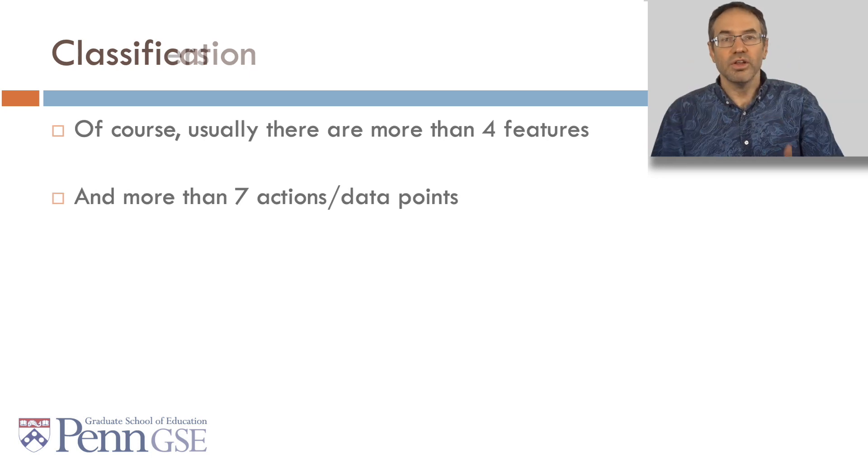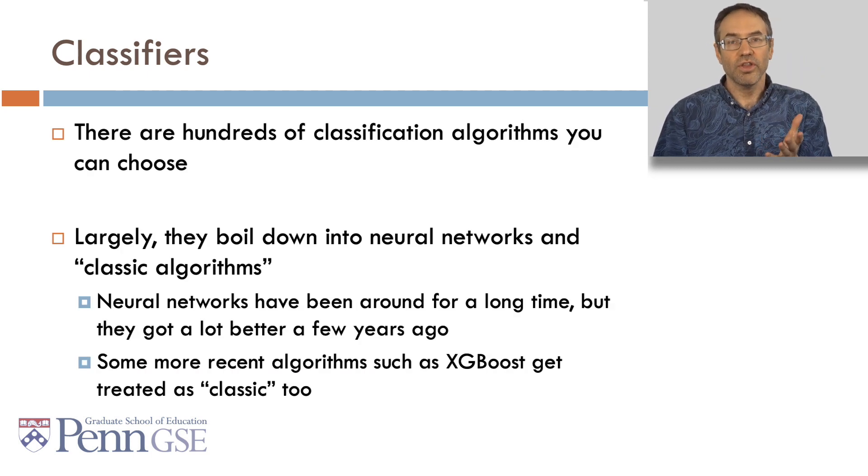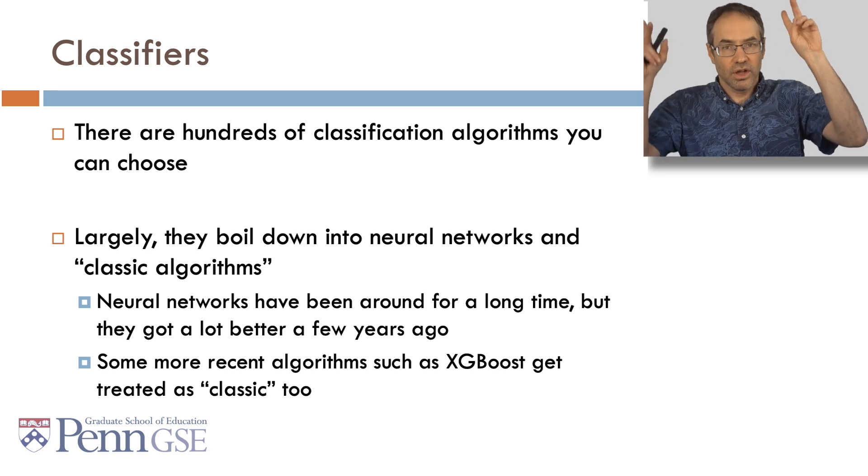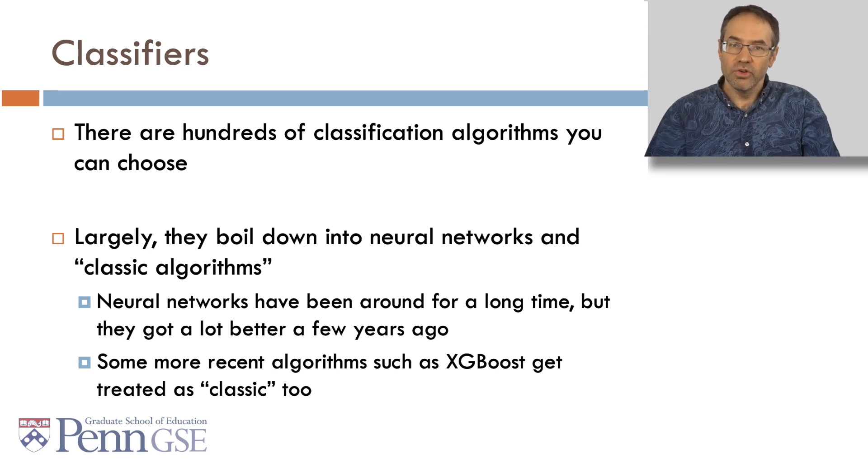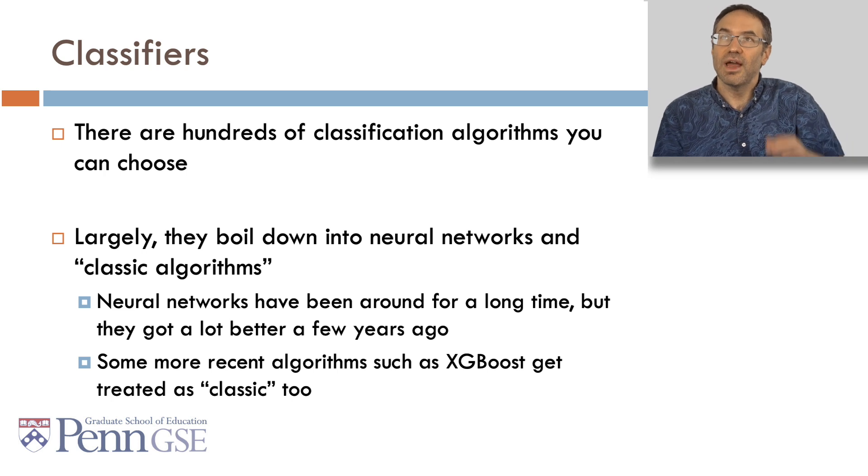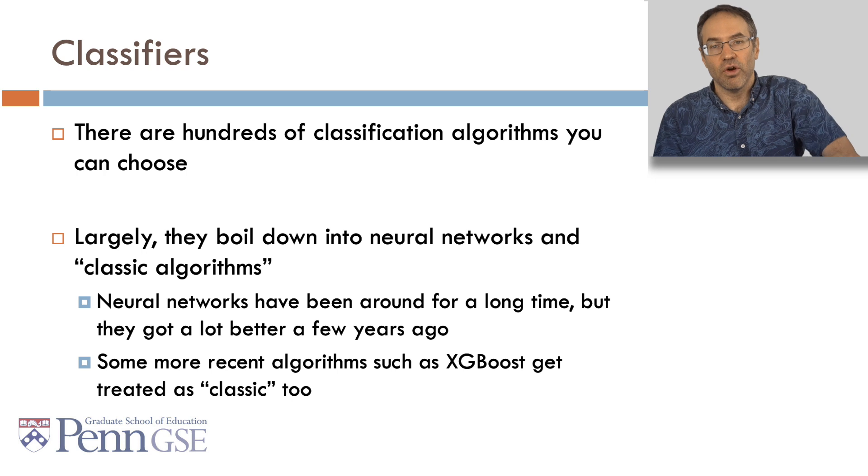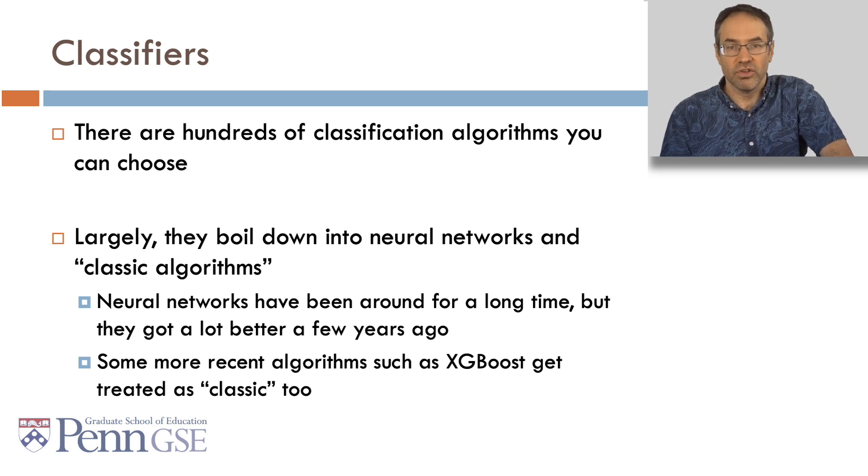There are literally hundreds of classification algorithms that you can choose. Largely, they boil down into neural networks and what might be called classic algorithms. Neural networks have been around for a long time, but they got a lot better a few years ago. And it's worth noting that classic doesn't necessarily mean how old they are, it can just mean kind of the style, because some more recent algorithms, like XGBoost, get treated as classic too.